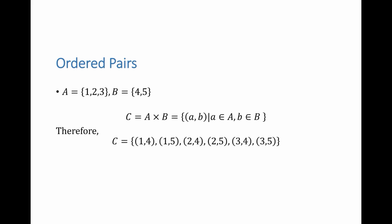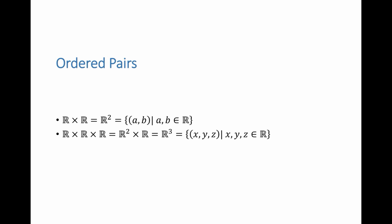I can define the set of ordered pairs from two sets using the symbol times (×). When A is the set containing three elements and B is the set containing two elements, the set C equal to A × B is the set of ordered pairs (a, b) where a comes from set A and b comes from set B. For this example, the elements in C are pairs like (1, 4), (1, 5), and so on.